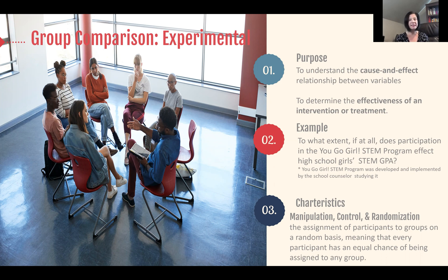Experimental design, like pre-experimental and quasi-experimental design, is characterized by manipulation. Just like quasi-experimental design, there is a within- or between-group control. But the characteristic that distinguishes a true experimental design is what's called randomization.